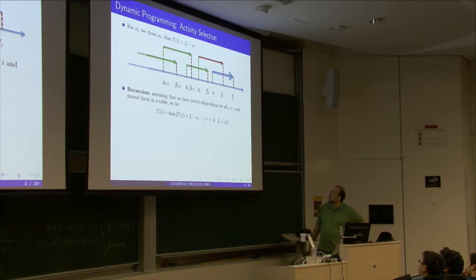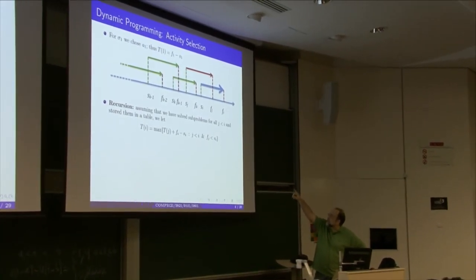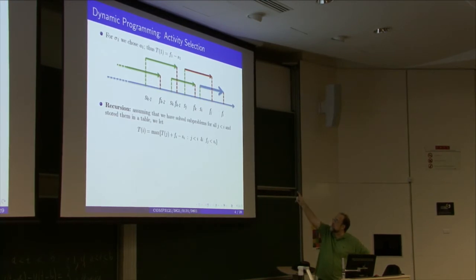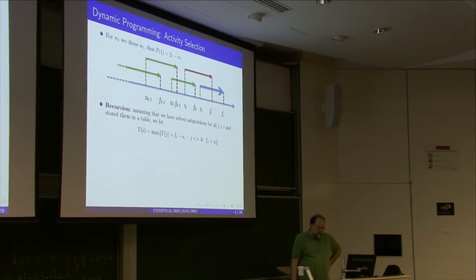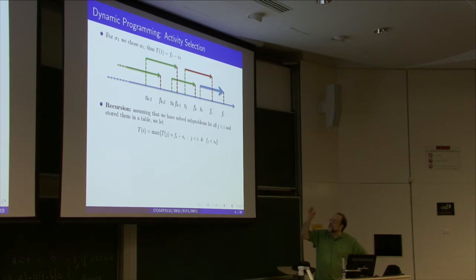What does it mean that activities are non-conflicting? Activity fj conflicts with activity i because fj finishes only after the i-th activity started — fj is larger than si. On the other hand, all other activities that are in green are non-conflicting with the i-th activity, but of course they may be conflicting with each other. We want to find the largest collection in terms of total duration time, not the number of them.